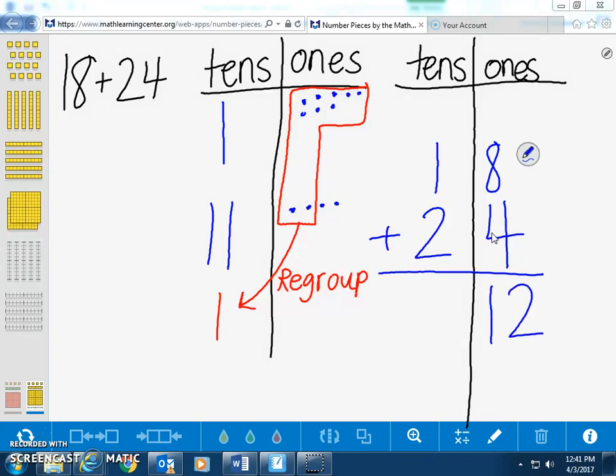We cannot record 12 1s in the 1s place, so we will have to compose a 10 out of 10 1s and regroup it to the 10s place.